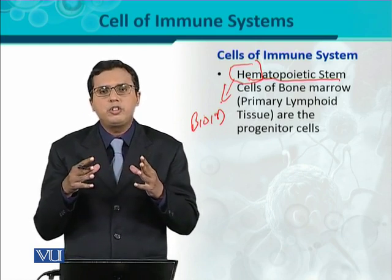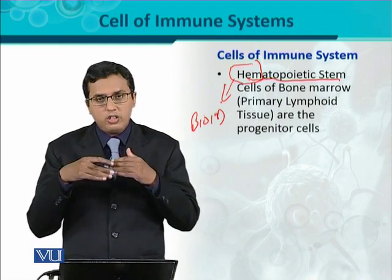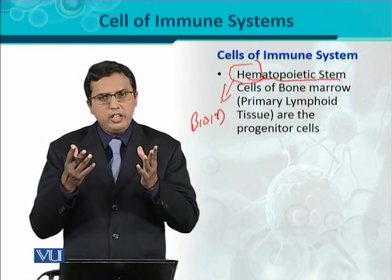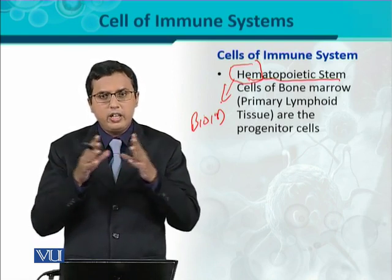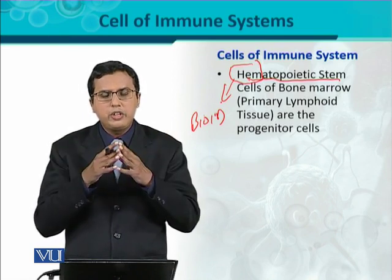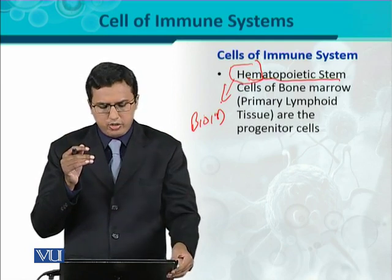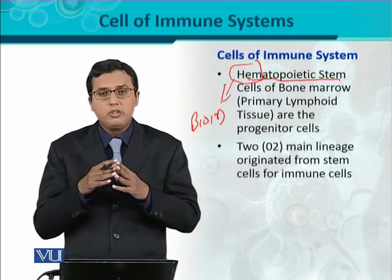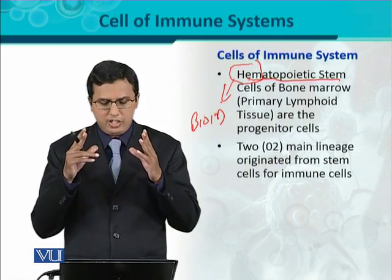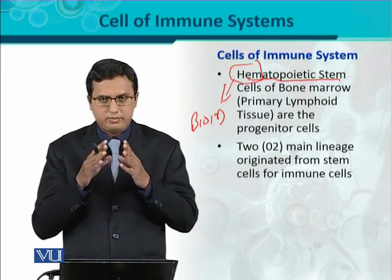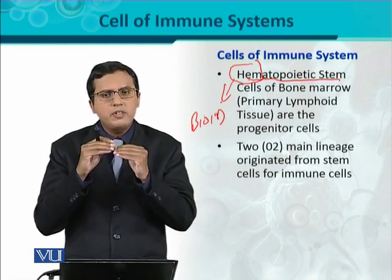That's why these are called as hematopoietic stem cells. Ab ye hematopoietic stem cells kahan hain? Ye primary lymphoid tissue ya generative lymphoid tissue mein present hain, jaise bone marrow mein. Whatever cells are being there, those are generally stem cells. Lekin un stem cells se different lineage, or different variety of cells, have just to originate. So inside the immune system there are basically two major lineages of immune cells.